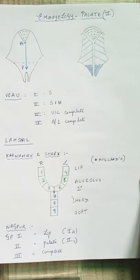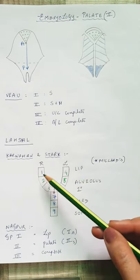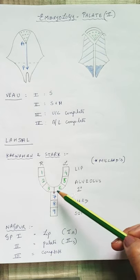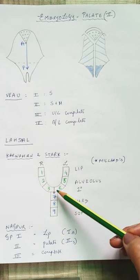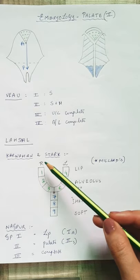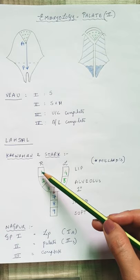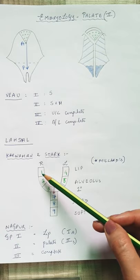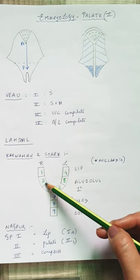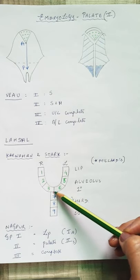One of the important classifications is the Kernan and Stark's Striped Y classification. This represents the different parts involved in cleft lip and palate, with denotations for the right and left sides. The numbered regions go 1, 2, 3, 4, 5, and 6 from above downward.